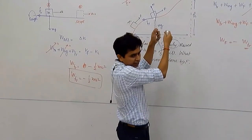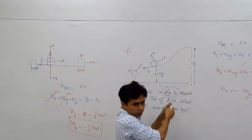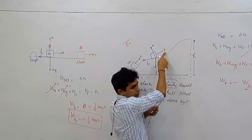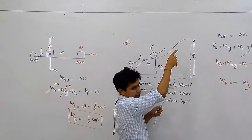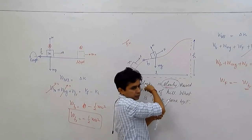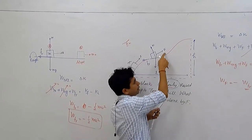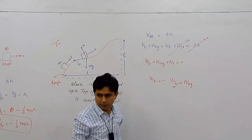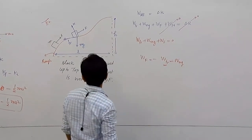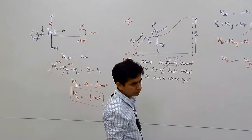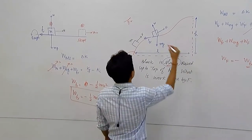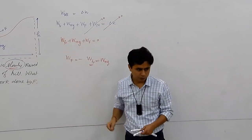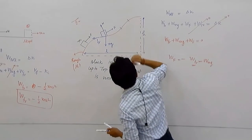Both mg and friction are doing negative work — they are trying to pull the object down and not allowing it to move up. Without the applied force F, the block cannot rise. These two forces try to pull it back, so they do negative work, while capital F does positive work. But how do we calculate the work done by friction on this irregular surface? We take a small portion of length ds.